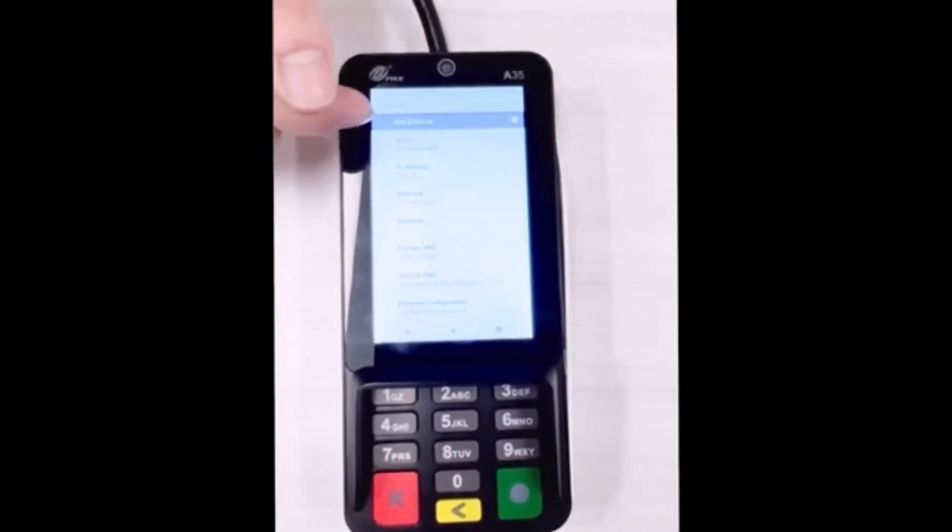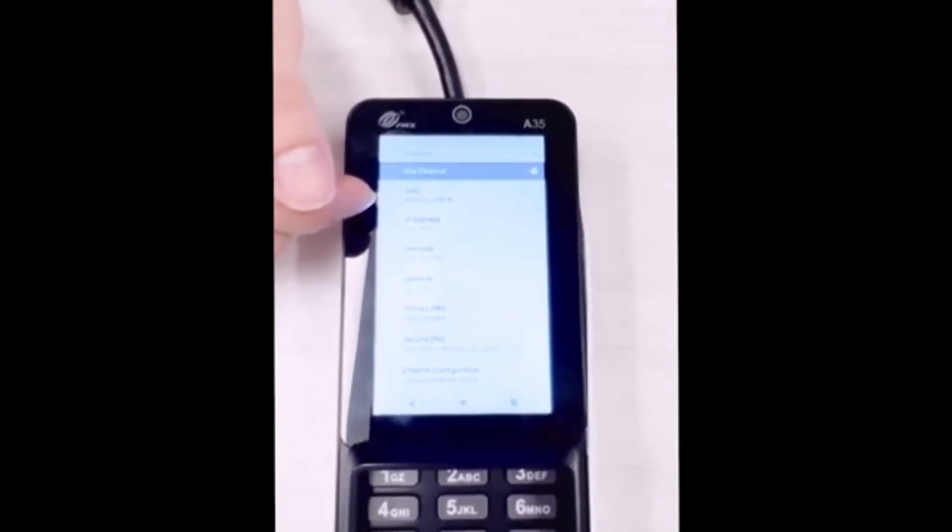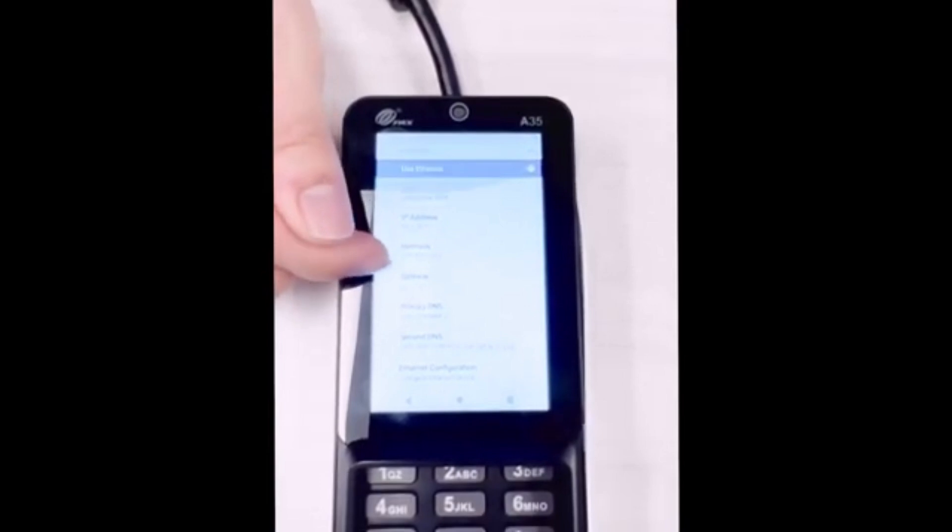Once you enable it, you can go into the ethernet settings like we just did, and you're going to look at the IP address. If you're noticing that it's 0.0.0, please wait about 5 to 10 seconds, and then the IP should generate.